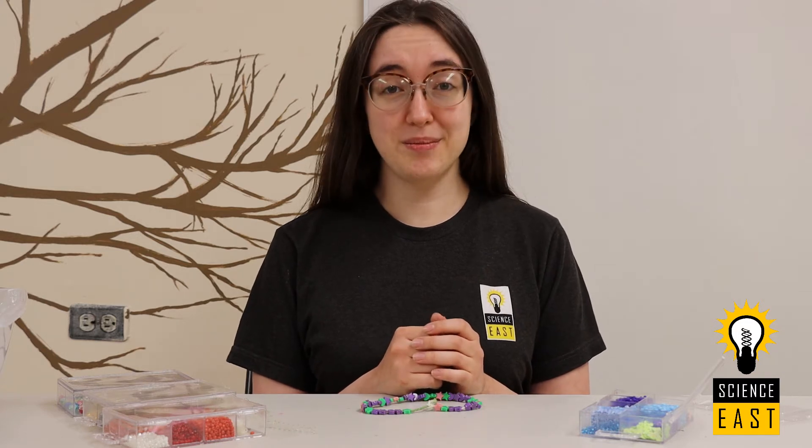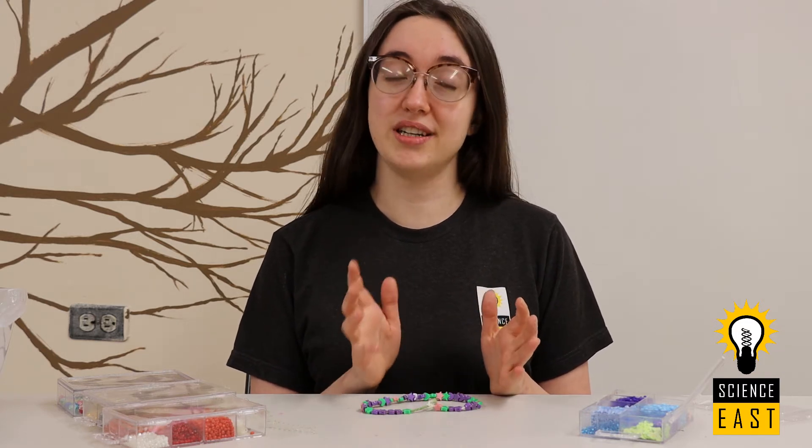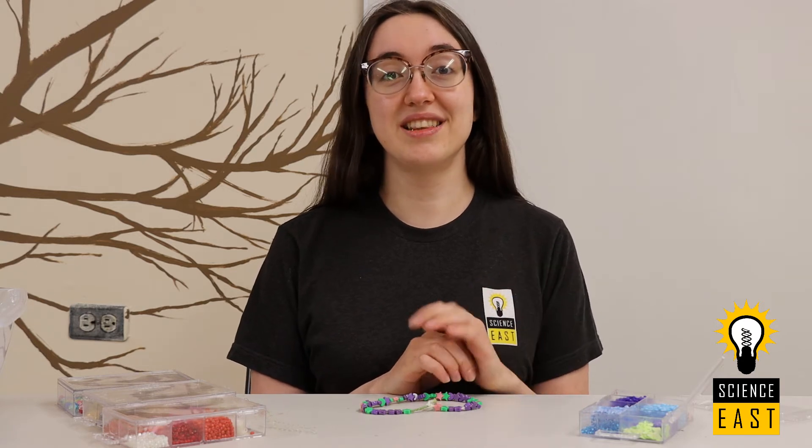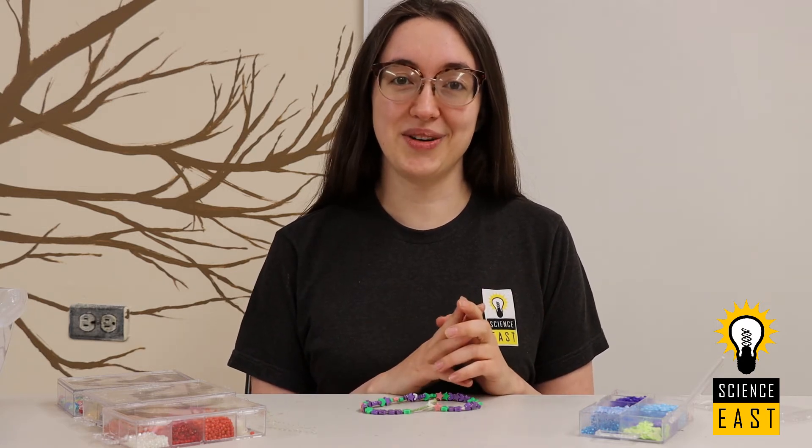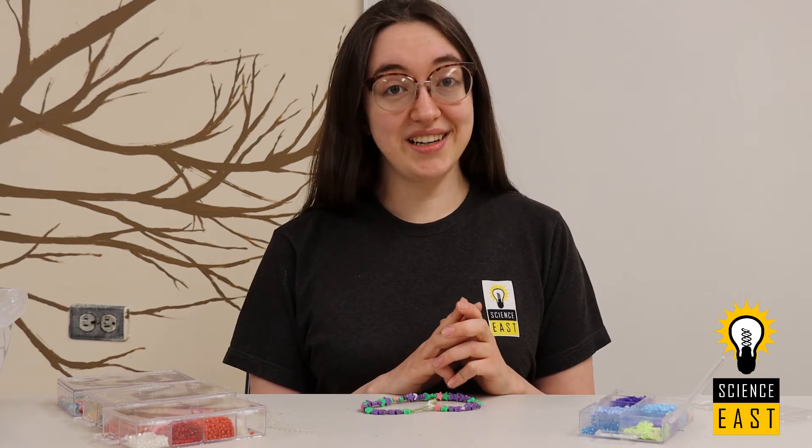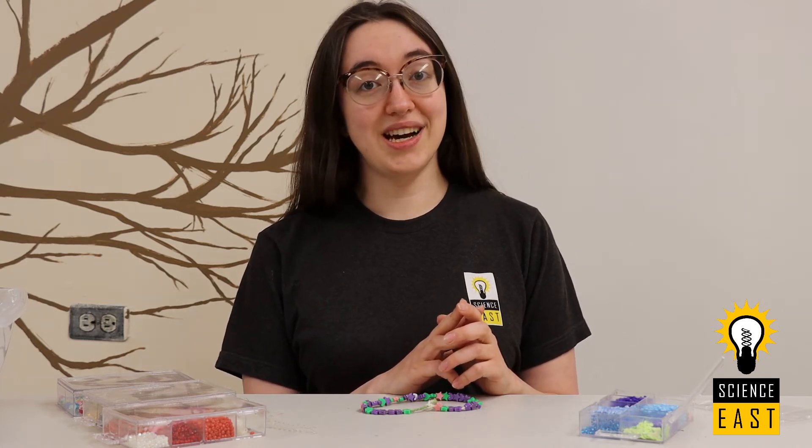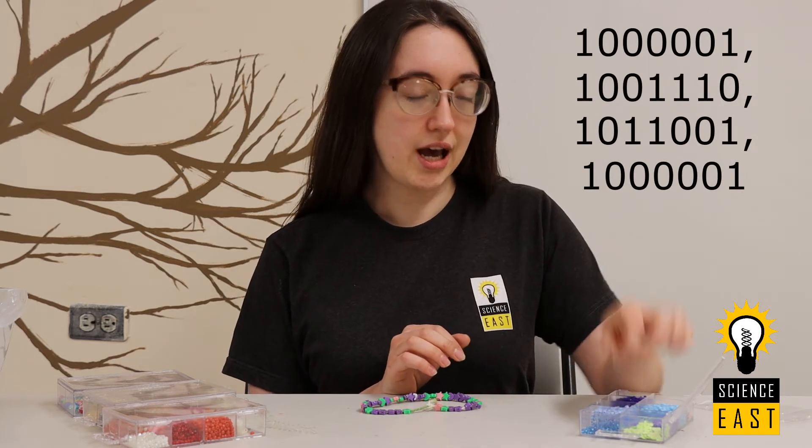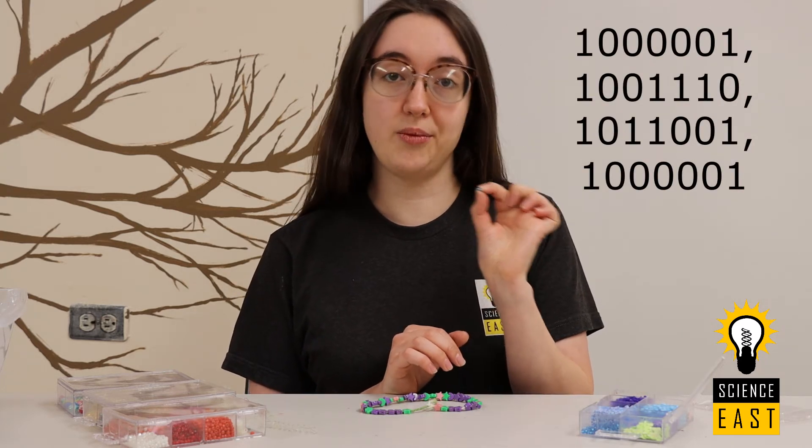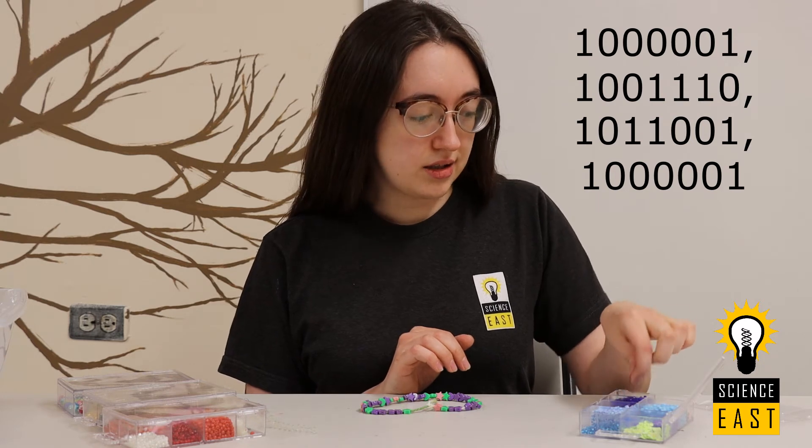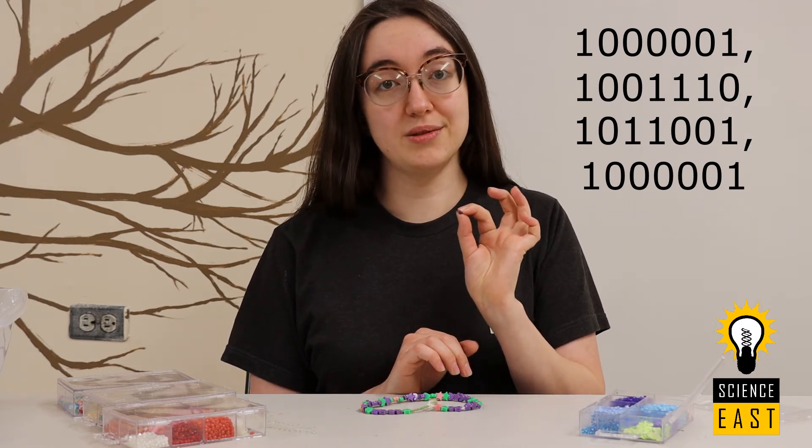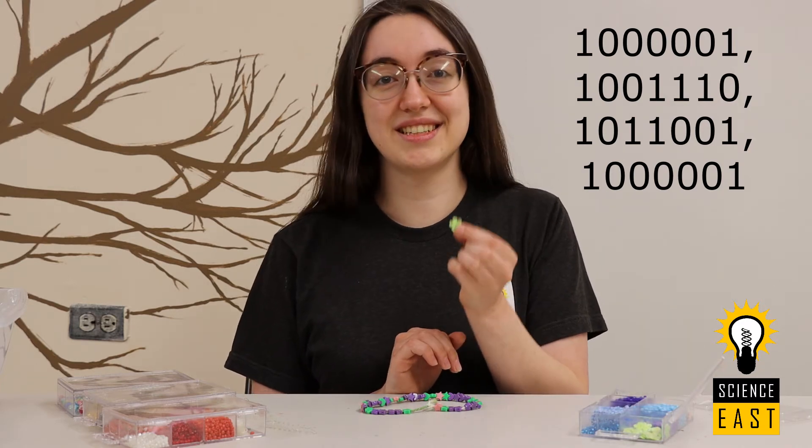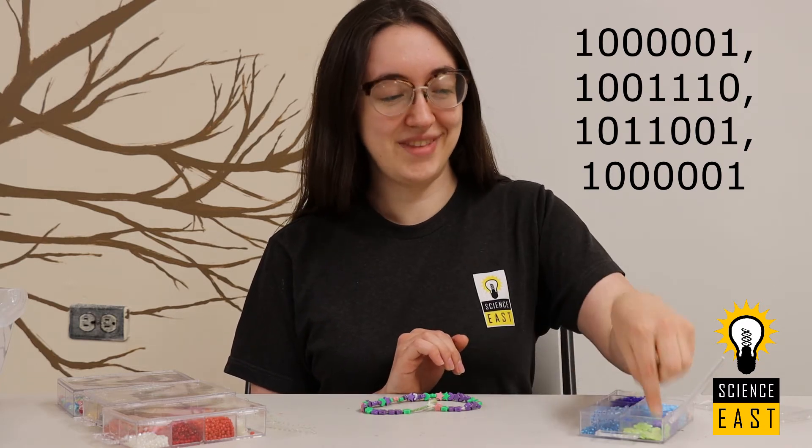Now, we don't have to memorize the binary code for each letter. We can check out a chart. Check out the description box in this video and see a chart that we made for you. So my name is Anya and the binary code that I'm going to have to make is right here. I'm going to use a light blue bead for my 1s and a dark blue bead for my 0s. I'm also going to use some green flowers to separate each letter. Let's get started.